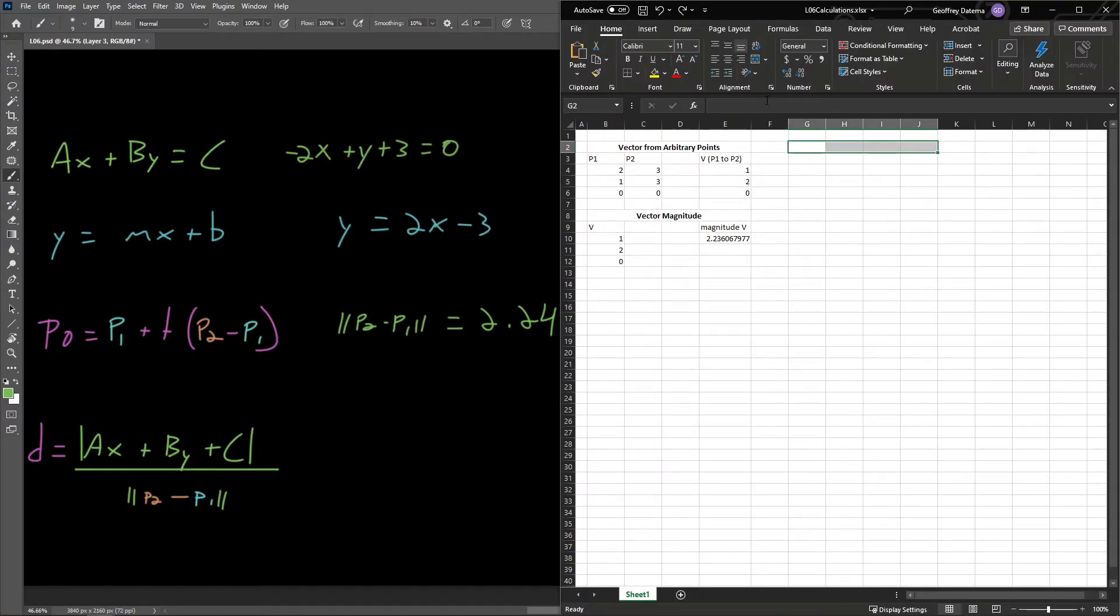With Excel open on the side here, let's give ourselves some more space to work with and call this shortest distance point to line. Let's go ahead and start defining the variables that we already know. We already have our line equation here. We can make some columns for A, B, and C. So A is equal to negative 2, B is 1, and C is equal to 3.